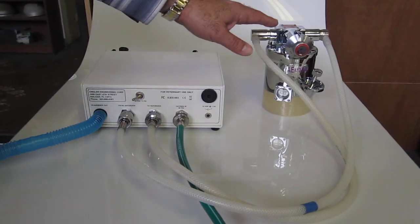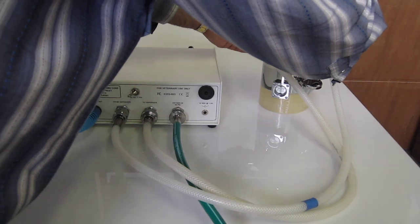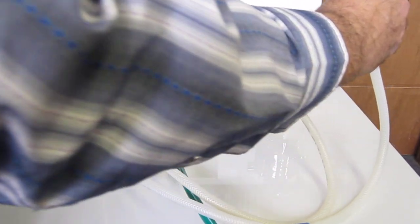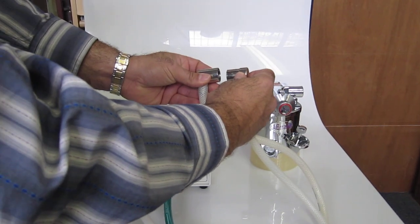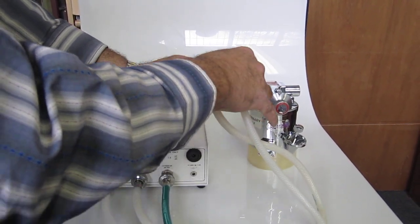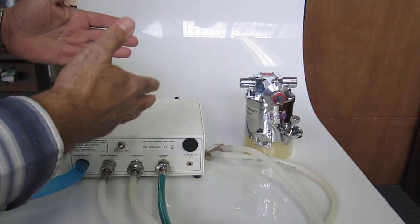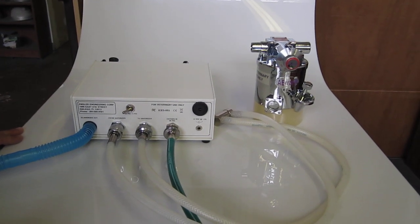If you do not want to have it hooked up to a vaporizer and you want to bypass the vaporizer to use it strictly as a ventilator, you remove the female and male connectors that are standard, and you connect them together, bypassing the vaporizer. This will now serve strictly as a ventilator and not as an anesthesia machine.